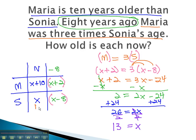X is what we had for Sonia's age. Maria is x plus 10, or 13 plus 10. Maria is 23 years old, Sonia is 13 years old. And that completes our problem. By setting up our table with the given information, the amount of change that occurs in an equation for the future or past, we can quickly solve an age problem.